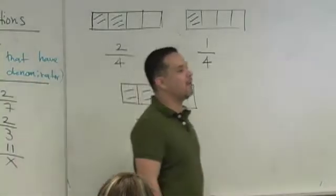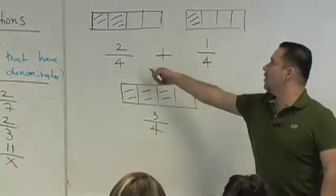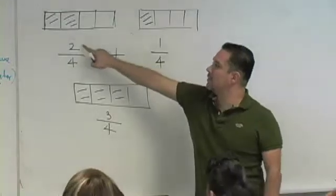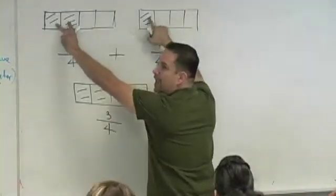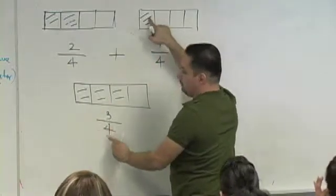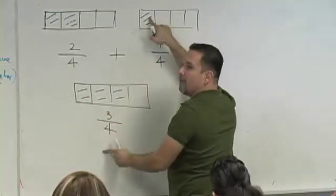What do you guys notice you did here when you had these two like fractions? What did you do? What kind of arithmetic did you really do? You added what? You added the shaded pieces. You added the numerators. And what did you keep? The denominator of being four.